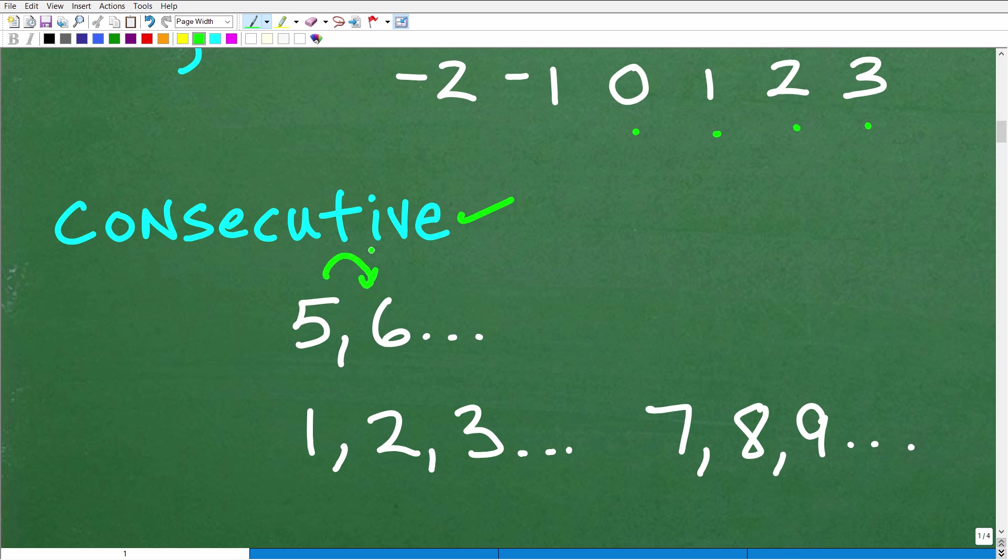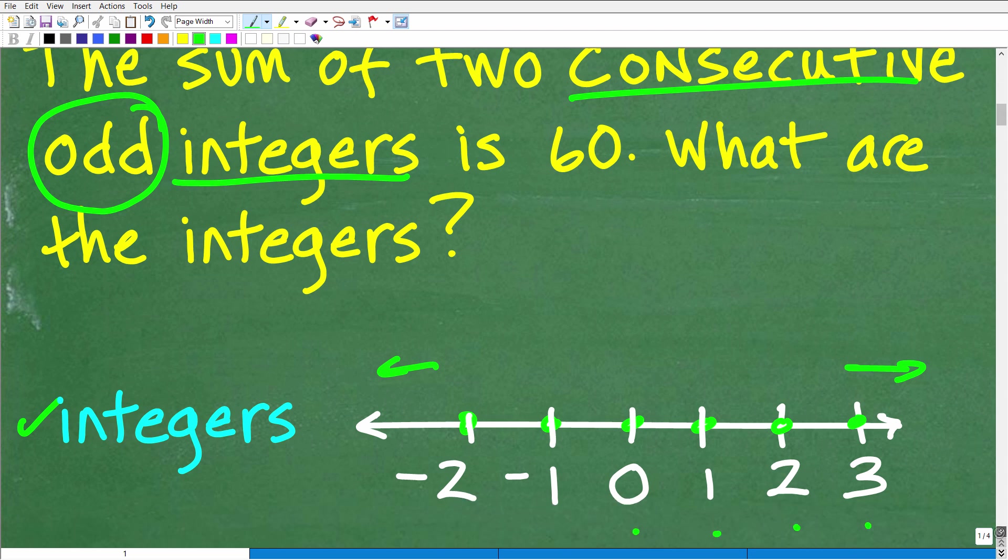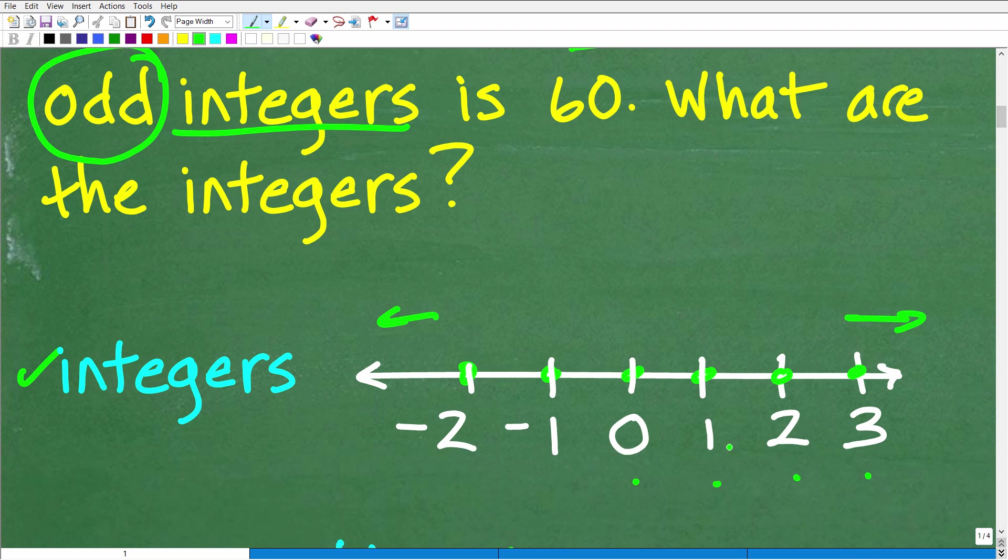So you've got five and then the next number is six. So you would describe these numbers as consecutive. Now, this problem is a little bit different because we're not talking about consecutive numbers. We're talking about consecutive odd integers. So we have to think about this for a second. Let's take a look at some examples of consecutive odd integers.